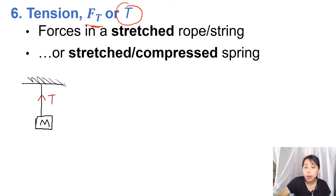Here's one question where strings are not involved — now it's a tow bar, which is a metal rod. This question is adapted from a past year paper, simplified a bit. We've got a tractor connected by a tow bar to a trailer. The trailer experienced a resistance to motion — could be friction or something else. We're trying to find the force on the tractor by the tow bar.